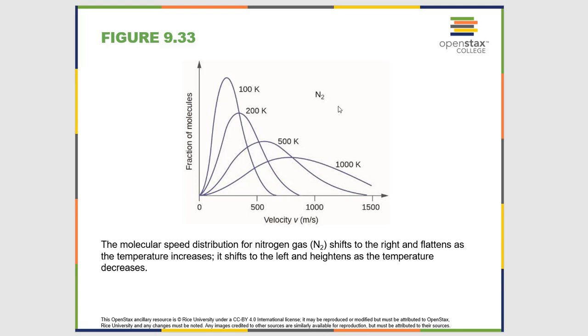So two phenomenon. As the temperature increases, the highest probability speed goes up, and the range of speeds also increases. So this is the kinetic molecular theory.